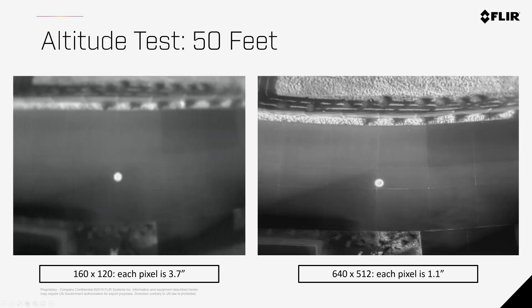As you increase the altitude of the airframe, the clarity is drastically reduced even just at 50 feet. Keep in mind that the difference in temperature between the pan and the pavement is significant — the anomaly or subject you're monitoring will not always be so distinct. Because we're dealing with a lower count of pixels than what you're used to in RGB cameras, stitching blob-like shapes becomes increasingly difficult, let alone to measure the temperature.